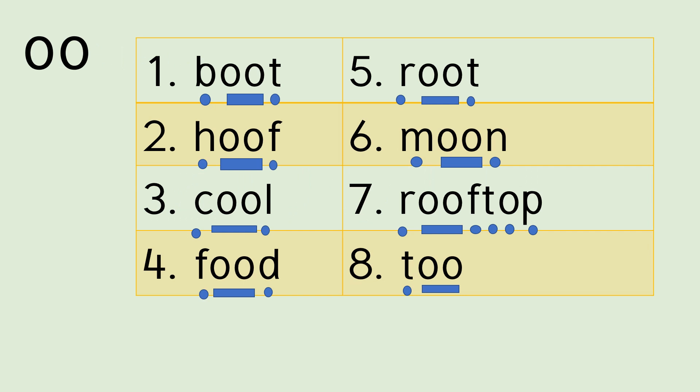We'll go through these words: number one, BOOT; number two, HOOT; number three, COOL; number four, FOOD; number five, ROOT; number six, MOON; number seven, we've got two bits here — ROOF and TOP — so we blend ROOF first, then TOP, separately, but it's actually one compound word: ROOFTOP.